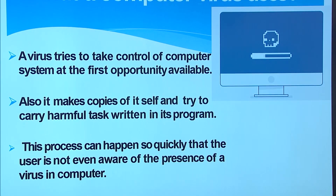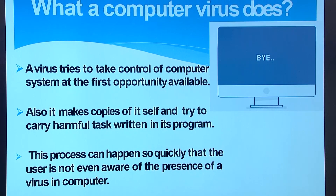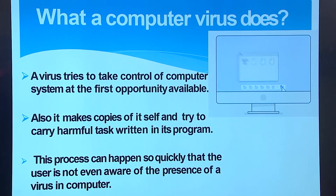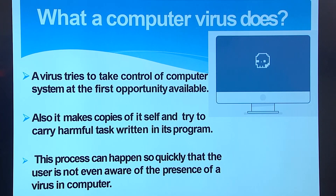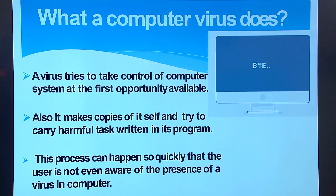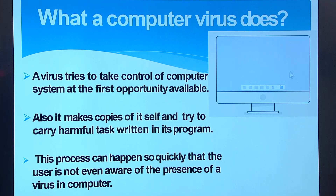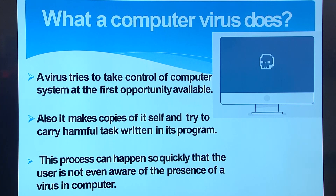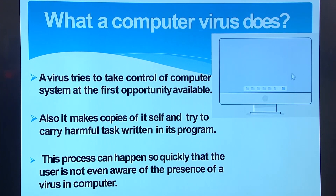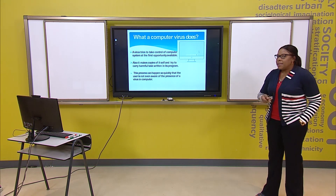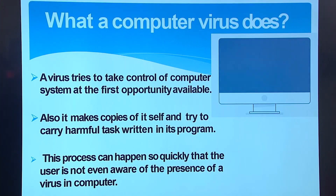A computer virus tries to take control of your computer once it gets there. It makes copies of itself and tends to affect all the different files and programs on your computer. When it's done with your computer, it moves on to other computers. So if your computer is connected to a network, all the computers that your computer communicates with automatically get this virus — that's why corona is spreading the way it's spreading. It happens so quickly that by the time you're aware, your computer is already taken over.